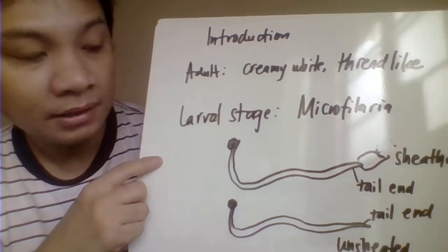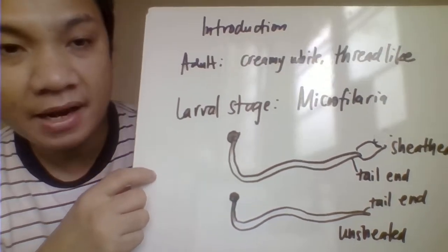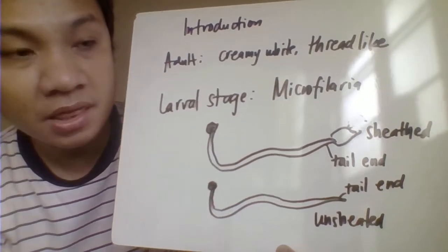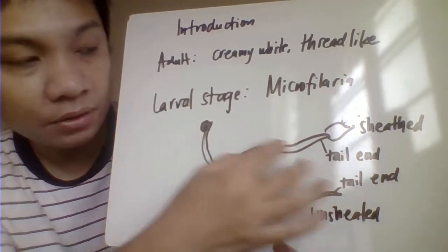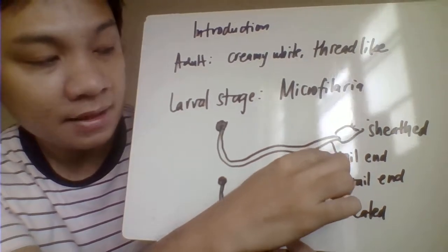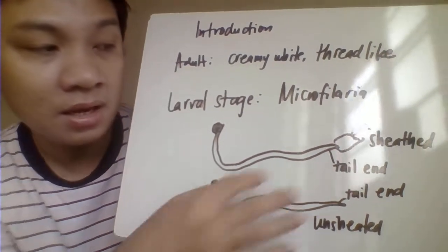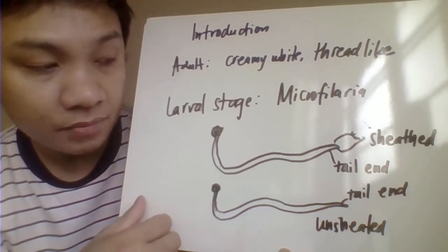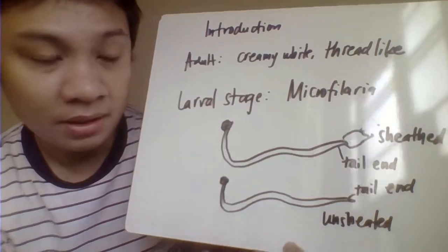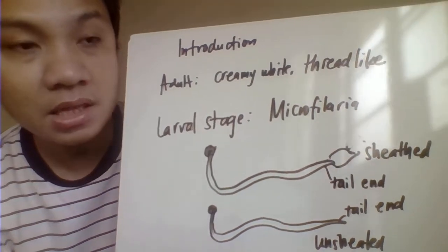They also have a larval stage called the microfilaria. Microfilaria are differentiated from one another by the presence or absence of a sheath. In the sheathed species, there is an additional transparent sheath extending beyond the tail end of the microfilaria. In unsheathed species, there is no such extension after the tail end. Later we'll be dividing the species as sheathed and unsheathed.